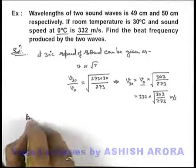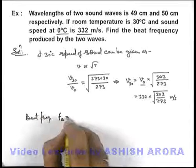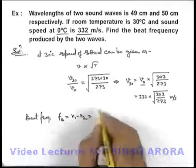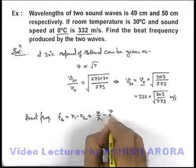Now if we wish to find out the beat frequency, we know for the two waves beat frequency can be given as n1 minus n2. So in this situation it can be given as v by lambda 1 minus v by lambda 2.